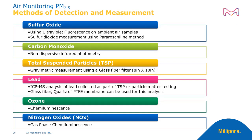The most effective detection methods for each of the top six pollutants can be seen below. Sulfur oxide is best measured using ultraviolet fluorescence on ambient air samples and pararosaniline methods for conventional samples. Carbon monoxide can be detected using non-dispersive infrared photometry. Total suspended particles can be quantified via gravimetric measurements, lead through ICP-MS, ozone via chemiluminescence, and nitrogen oxides via gas-based chemiluminescence.